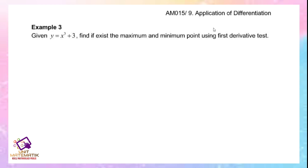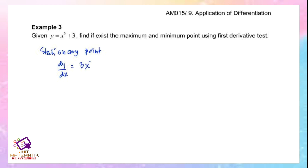Example 3: Given y equals x cubed plus 3, find if there exists a maximum or minimum point using the first derivative test. To find the stationary point, first find dy/dx, which equals 3x squared. Set dy/dx equals 0, so 3x squared equals 0, giving x equals 0.